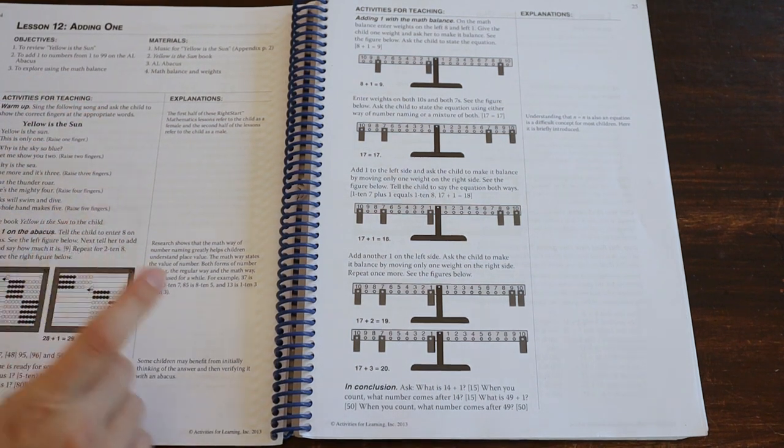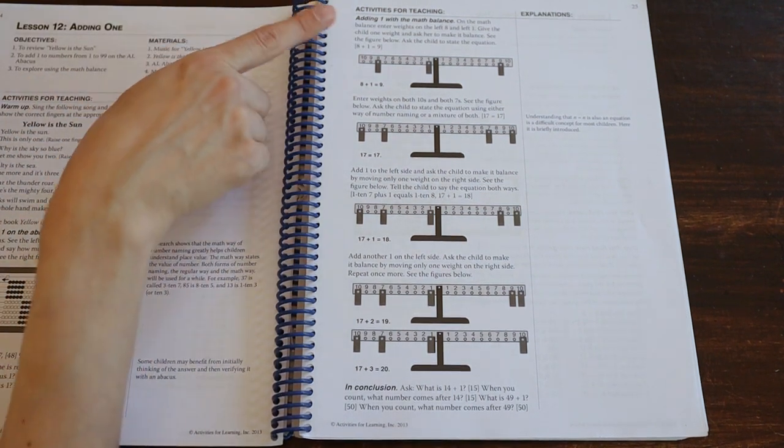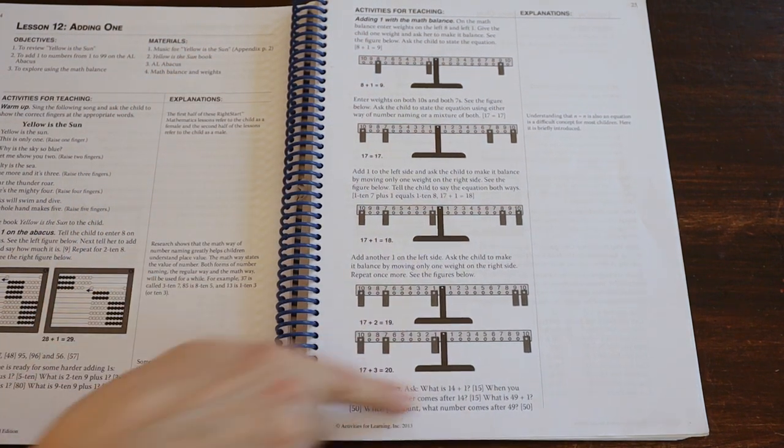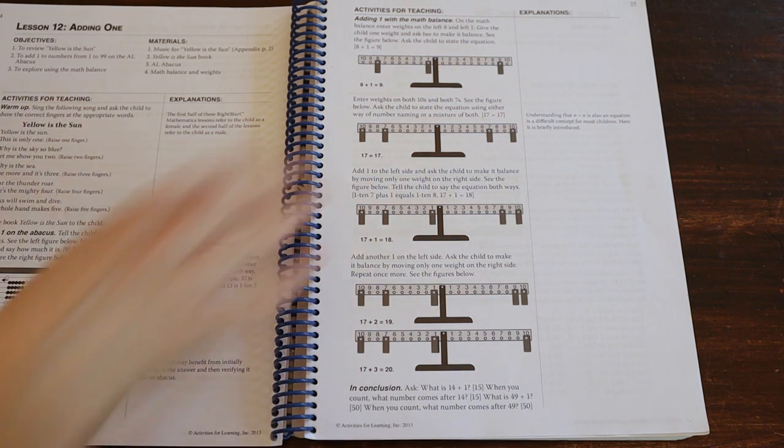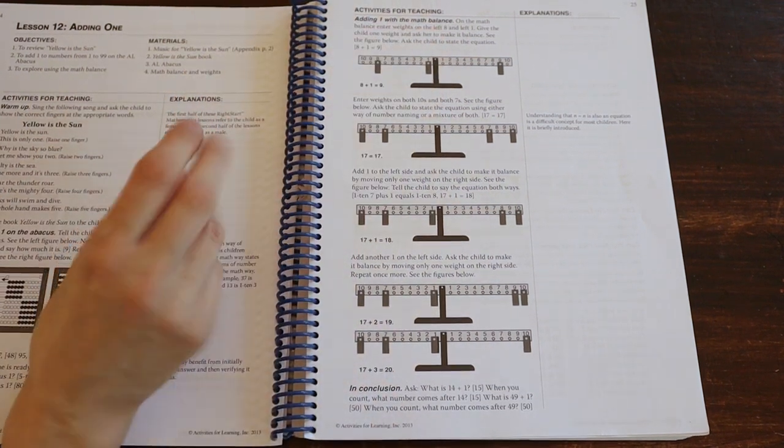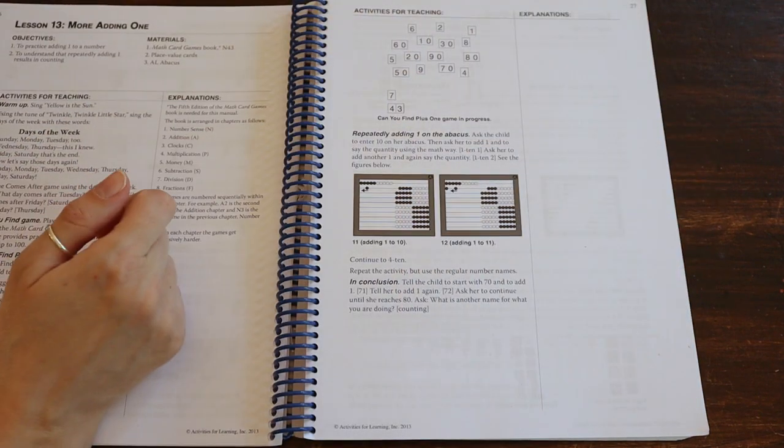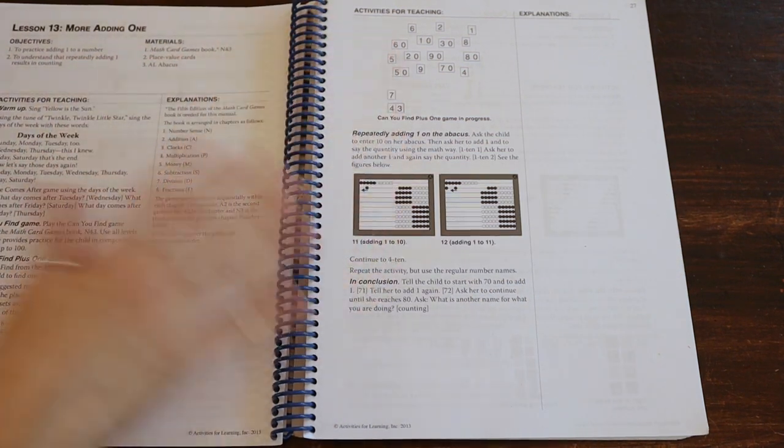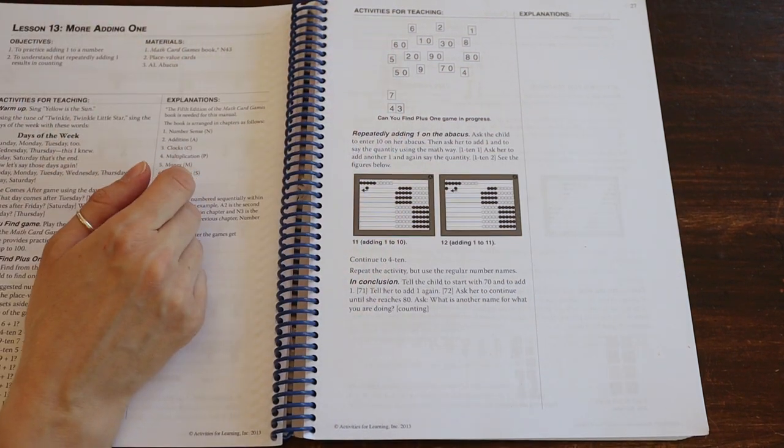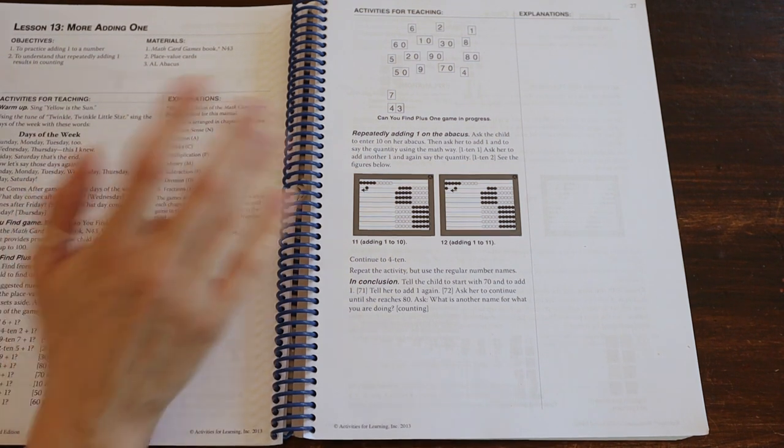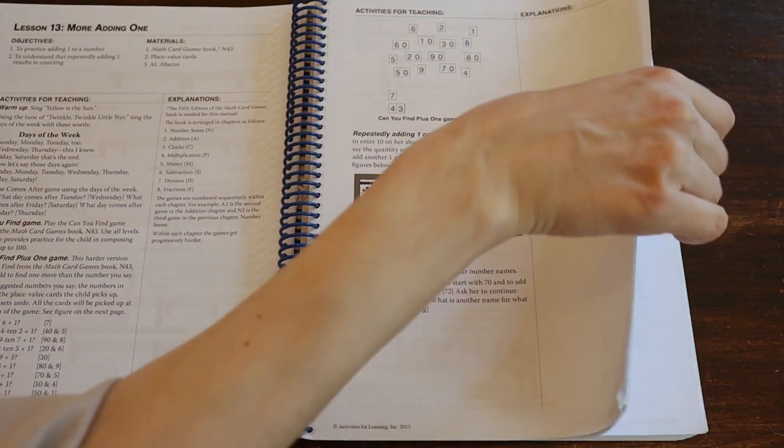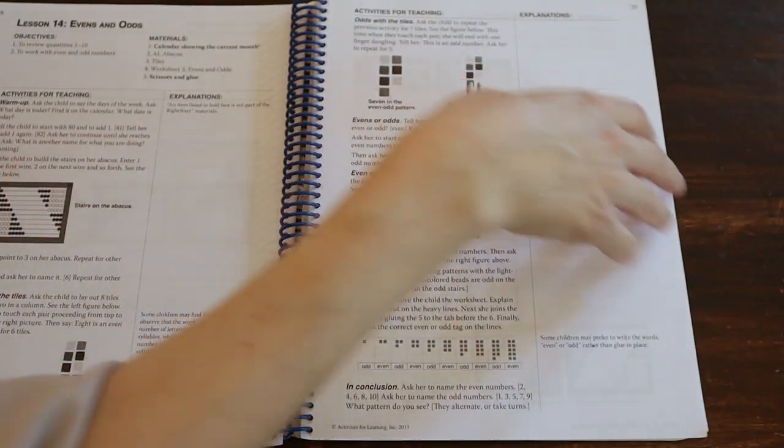So you have your warm up, you sing your yellow is the sun, and then it looks like they've got some abacus work, and then they combine that with the math balance. And then you have your conclusion. If this lesson goes for five, ten minutes, and then we're done, I'll move on, and I'll do the next lesson. No problem. If the lesson is taking me forever because the game is taking a while or whatever, I'll stop at a twenty minute mark and say, you know what, that's enough for today. We'll come back and we'll pick up tomorrow. Right Start gives you that ability to do that.